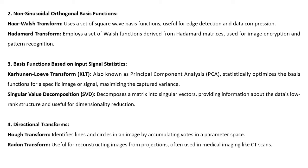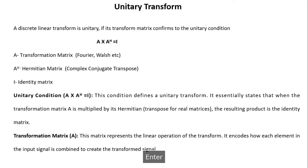Directional transforms include the Hough transform, which identifies lines and circles in an image by accumulating votes in parameter space, and the Radon transform, which is useful for reconstructing an image from projections and is often used in medical imaging like CT scans. Now, an important concept: a discrete linear transform is unitary if its transform matrix conforms to the unitary condition.